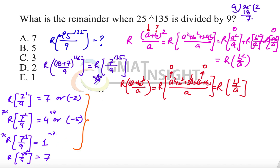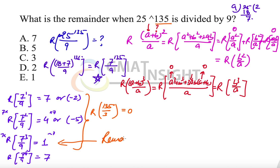We need to reach power 135. Dividing 135 by 3, the remainder is 0 because 135 is completely divisible by 3. Counting the powers 1, 2, 3, 4, 5, 6... the 135th power falls at the last step of the cycle, which gives remainder 1. Therefore, the remainder when 25^135 is divided by 9 is equal to 1.